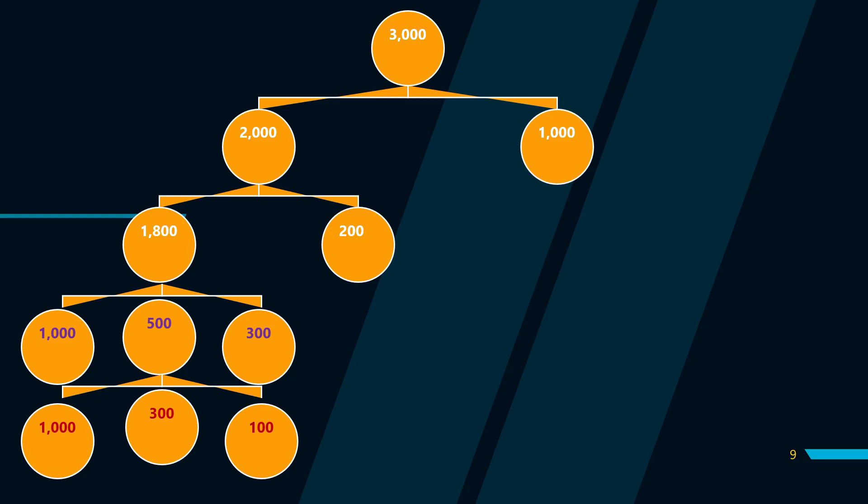Ek company bhi jab apne shares baahir bechne nikalti hai to ek maximum number of shares hi hote hain jo ek company public ko bech sakti hai — aur woh maximum number hamesha uske Memorandum of Association mein likha hota hai. The maximum amount of shares that a company can raise is known as authorized share capital. Is example mein us bageechein mein maximum 3000 mangoes ho sakte the — waise hi ek company ke bhi maximum number of shares hote hain, unhe bolte hain authorized share capital.